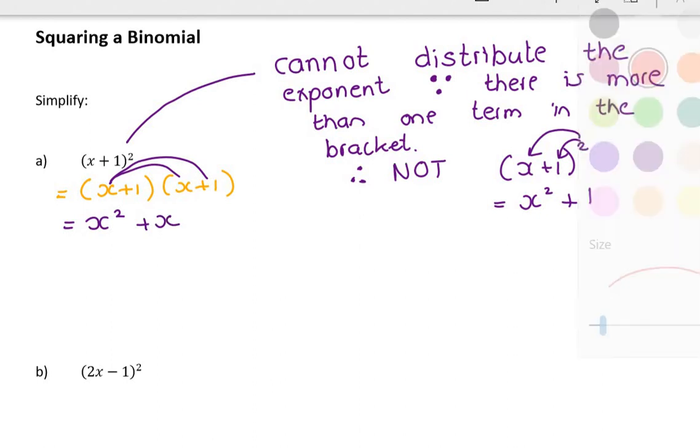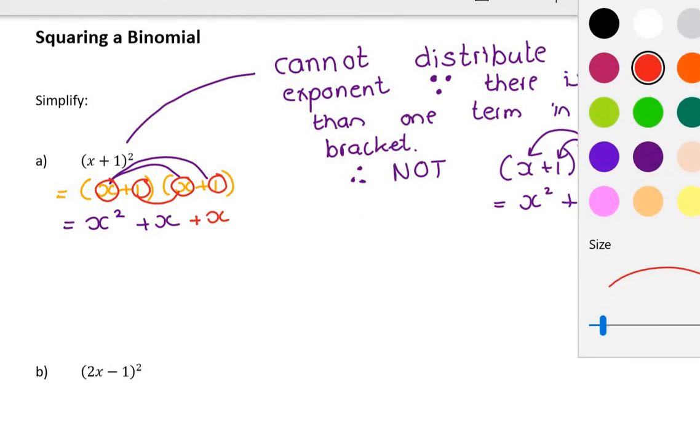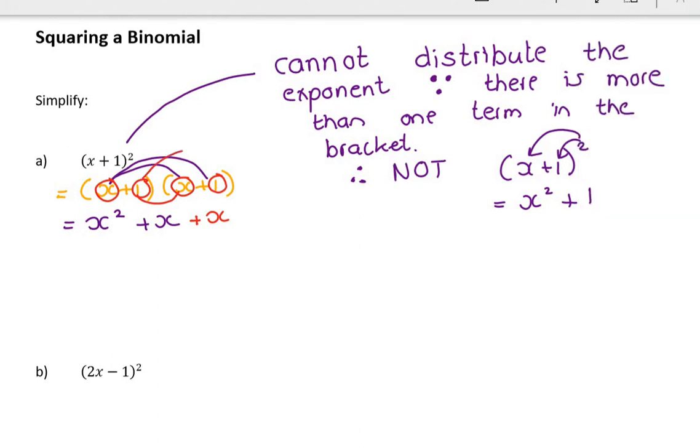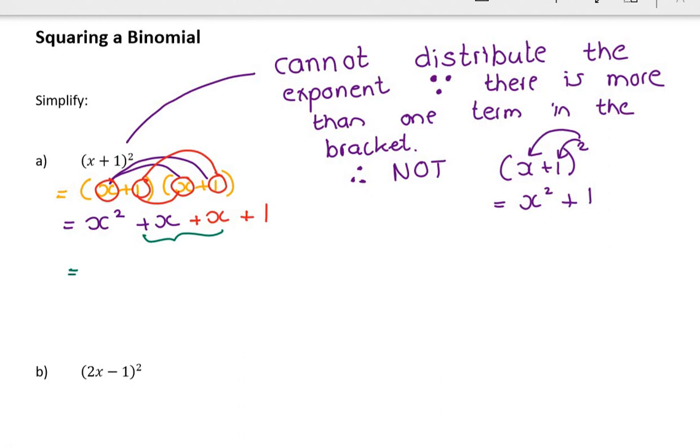And then what you'll notice is have a look that next term is also an x simply because to do the first x you said x times 1 and now I'm saying 1 times x because the brackets are identical so my middle terms land up being identical. And then my last one, sorry it was 1 times 1 which is 1 so my middle terms land up being identical and I add them together and I get x squared plus 2x.